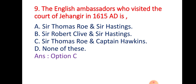Question 9: The English ambassadors who visited the court of Jahangir in 1615 AD were — Option A: Sir Thomas Roe and Sir Hastings; Option B: Sir Robert Clive and Sir Hastings; Option C: Sir Thomas Roe and Captain Hawkins; Option D: None of these. The right answer is Option C — Sir Thomas Roe and Captain Hawkins visited the court of Jahangir in 1615.